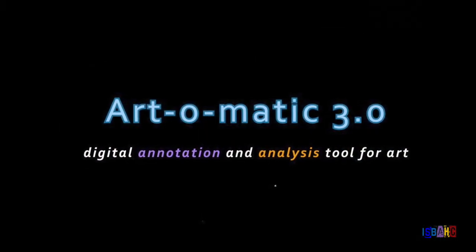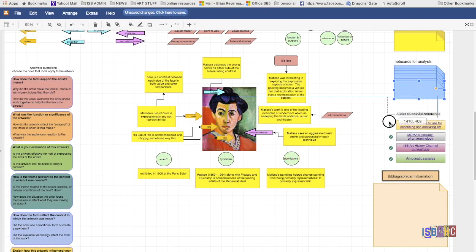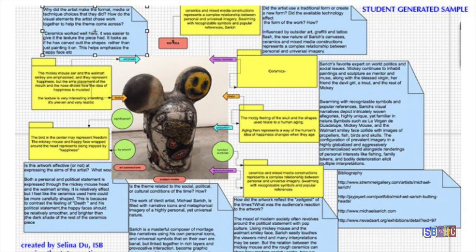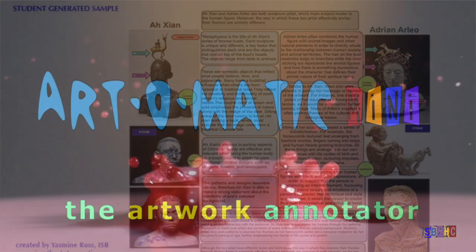There is an online tool I developed known as the Art-O-Matic where students can develop their analytical skills. The Art-O-Matic allows students to create visual annotations of artworks and provides guiding questions, links to art terminology, and support for language learners. Of course, there are instructional videos on how to use the Art-O-Matic on the ISB Art History Channel as well.